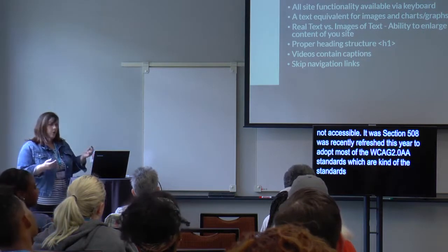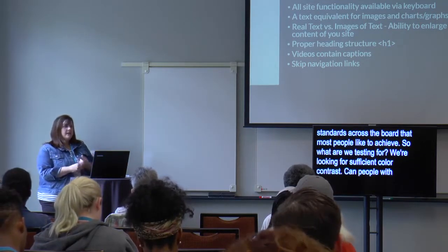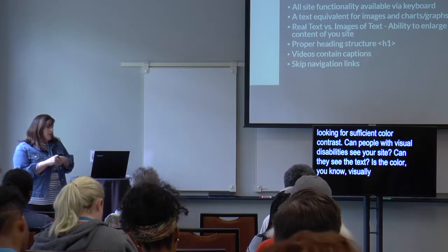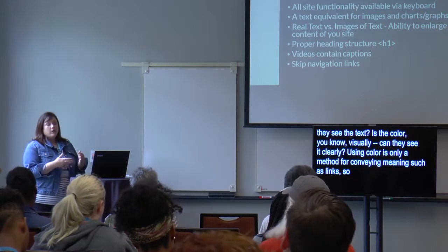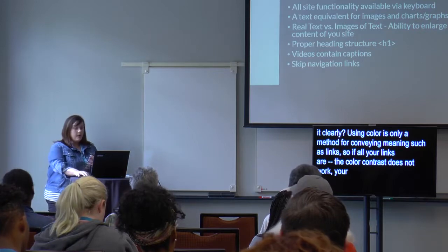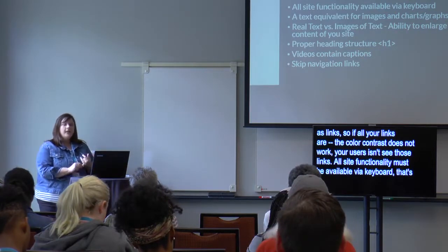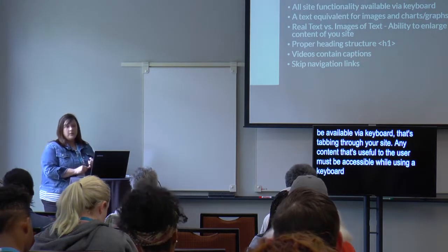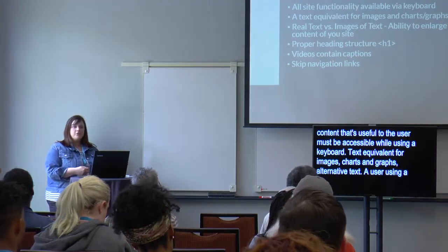What are we testing for? We're looking for sufficient color contrast — can people with visual disabilities see your site and read the text? Using color as the only method for conveying meaning, such as for links, is an issue if that color contrast doesn't work. All site functionality must be available via keyboard — that means tabbing through your site. Text equivalents for images, charts, and graphs through alternative text are essential because a user with a screen reader needs that information to understand your web page.